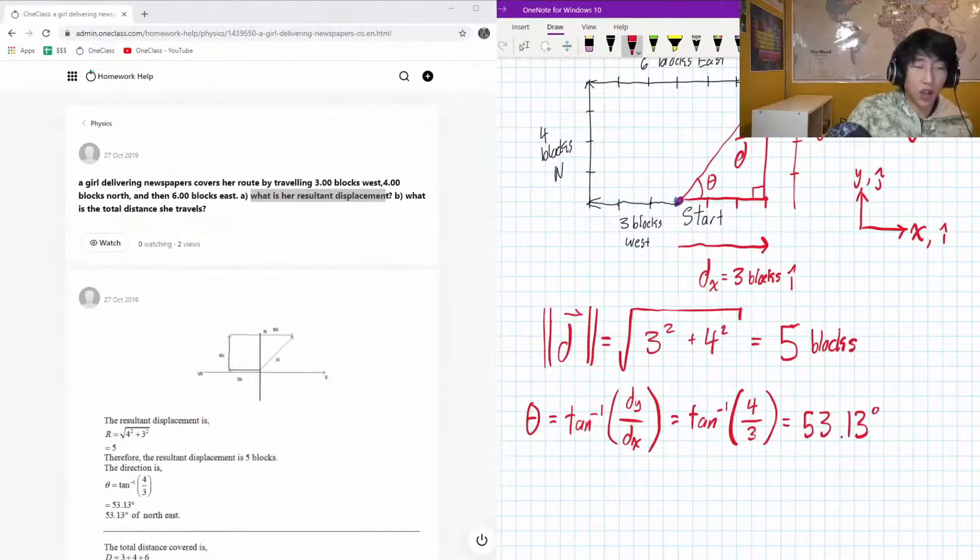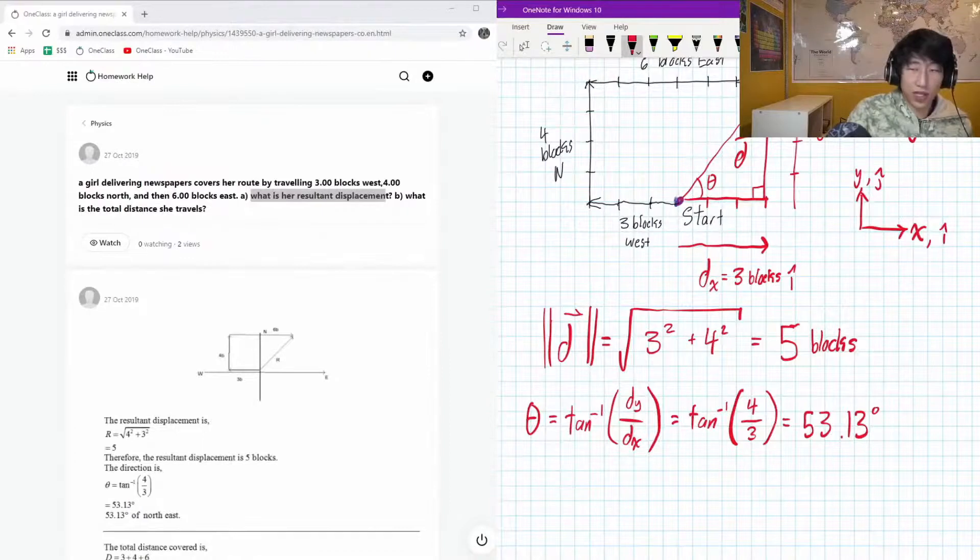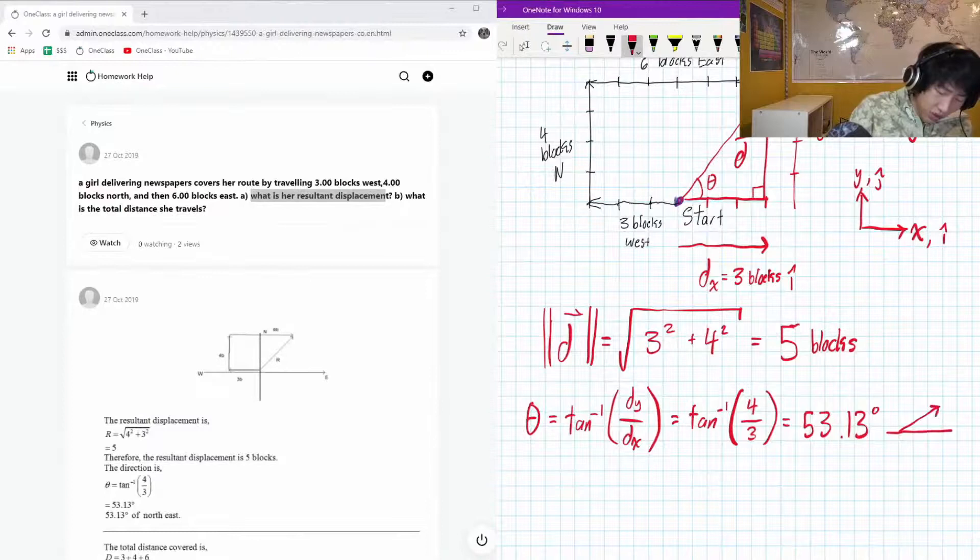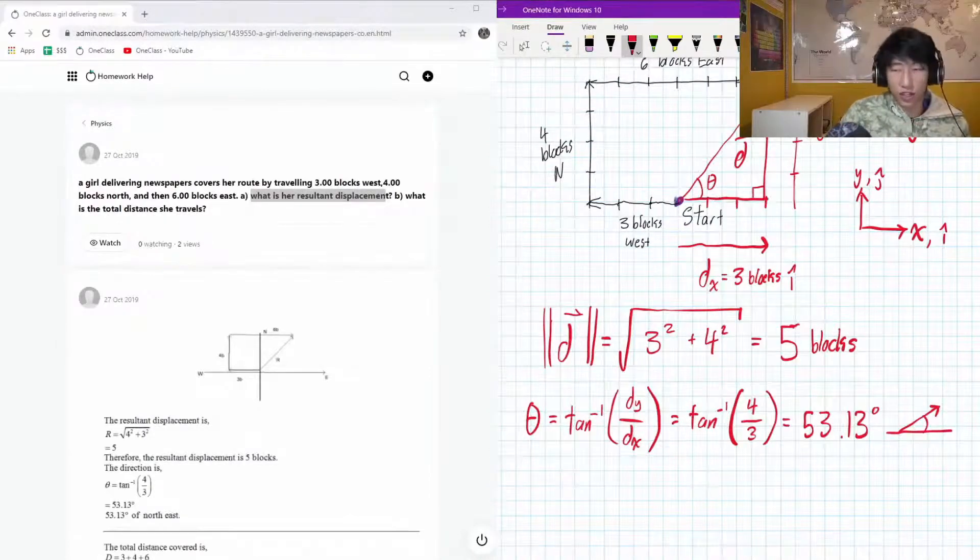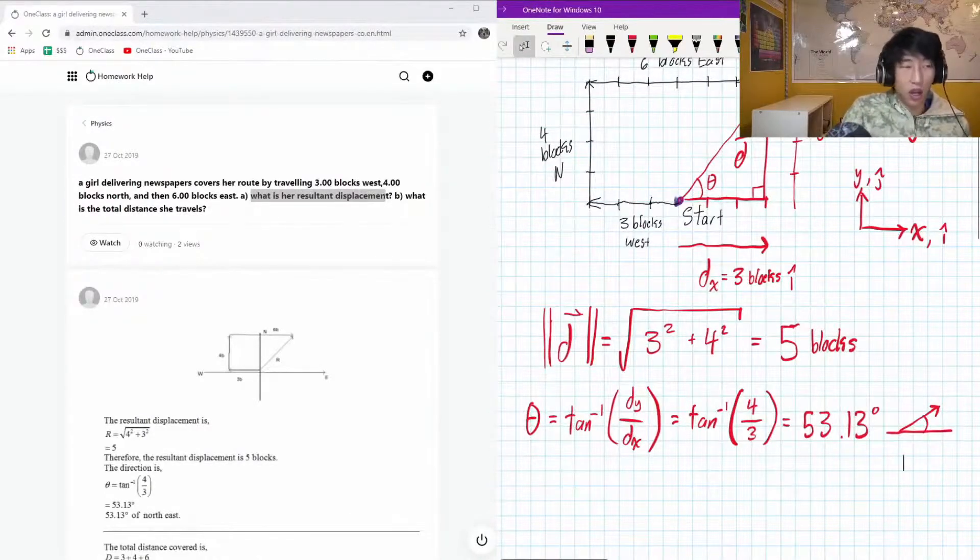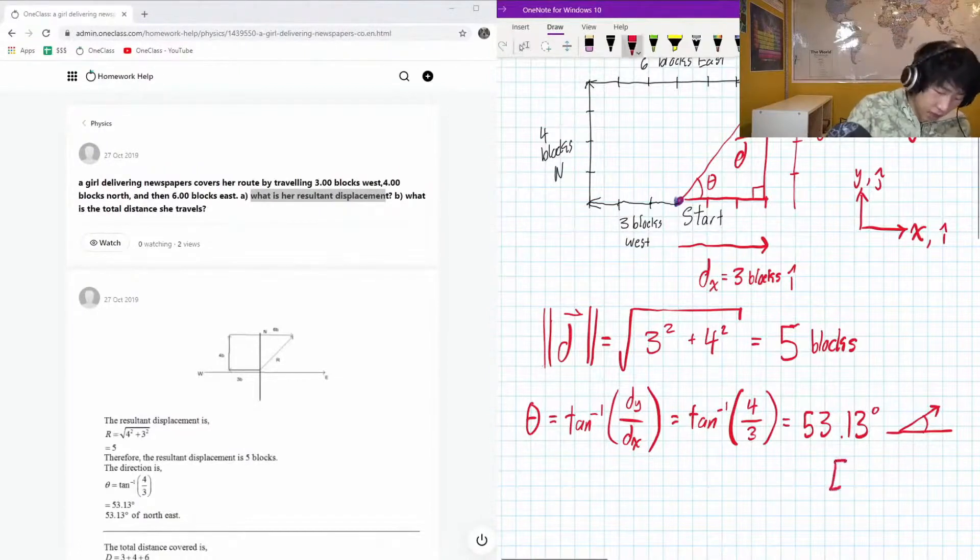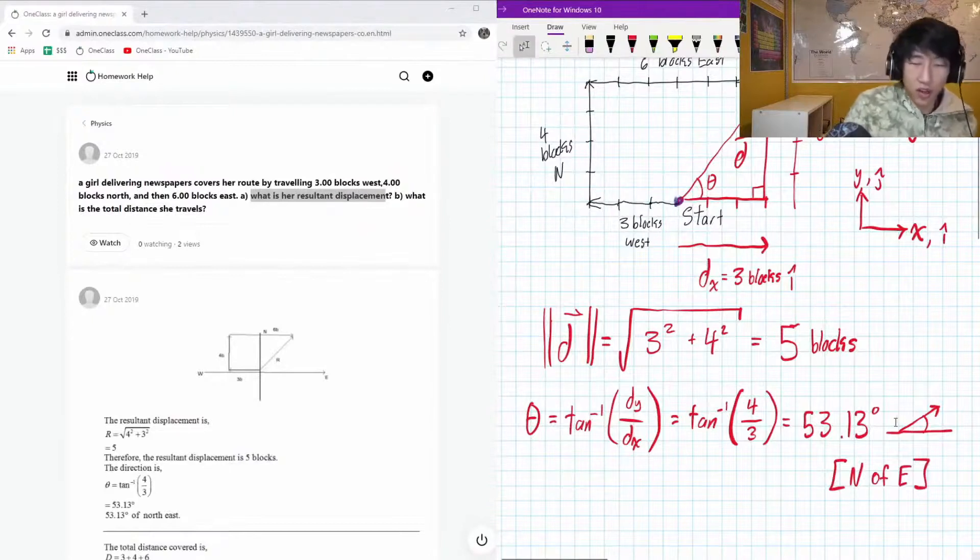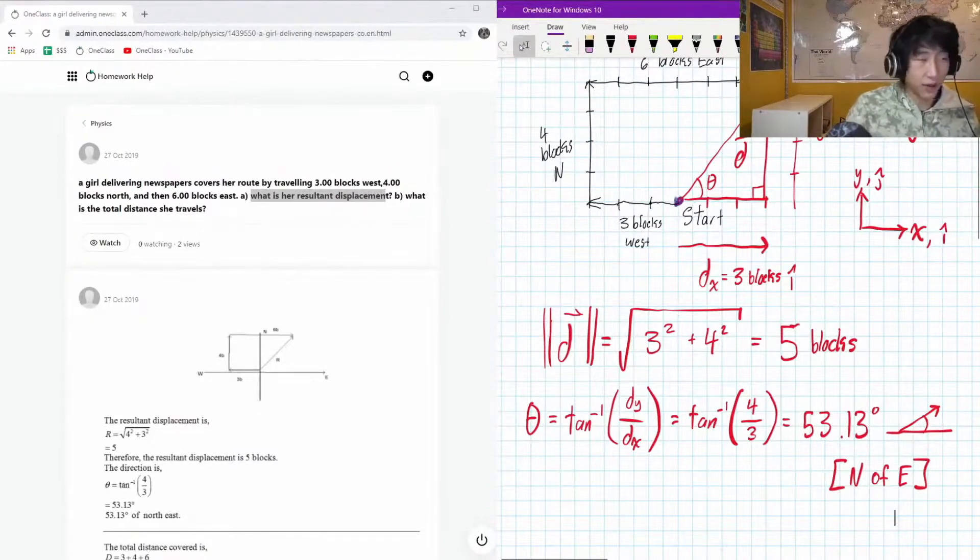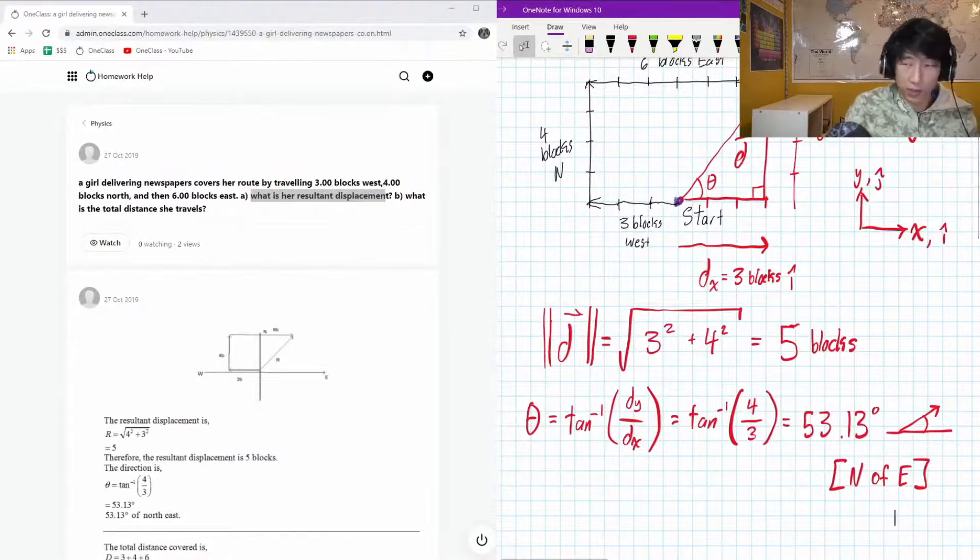And I got 53.13 degrees. And this is counter-clockwise with respect to the positive x-axis that we defined. And to kind of represent what that means, you can draw a little drawing like this, just to show that. This is like the direction of the angle. So her displacement is 5 blocks, 53.13 north of east. You can also write this as north of east. That's another way that we could represent this. And that would address the first part of the question. What is the resulting displacement? That's beautiful.